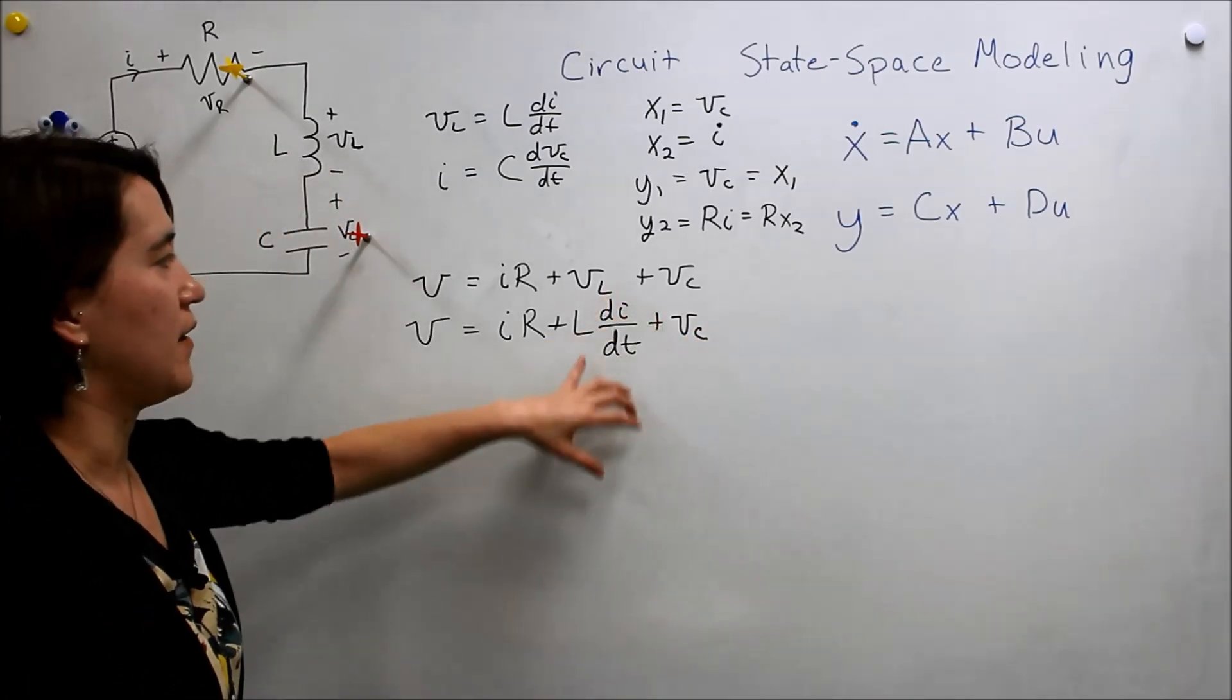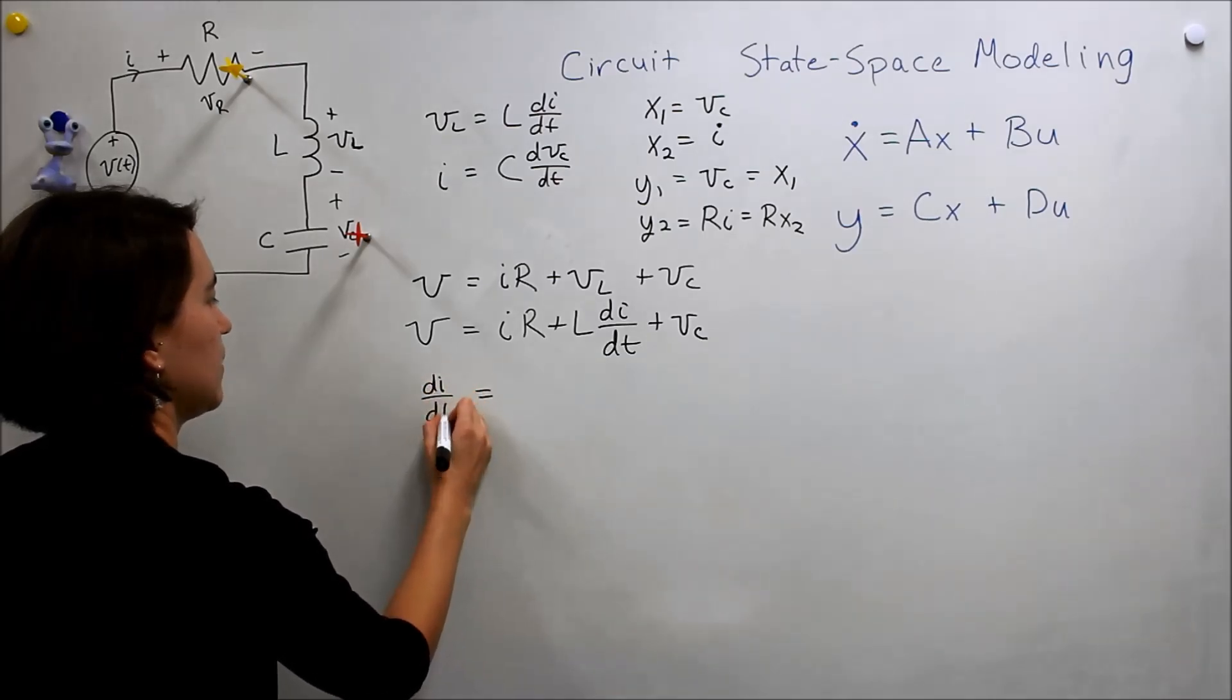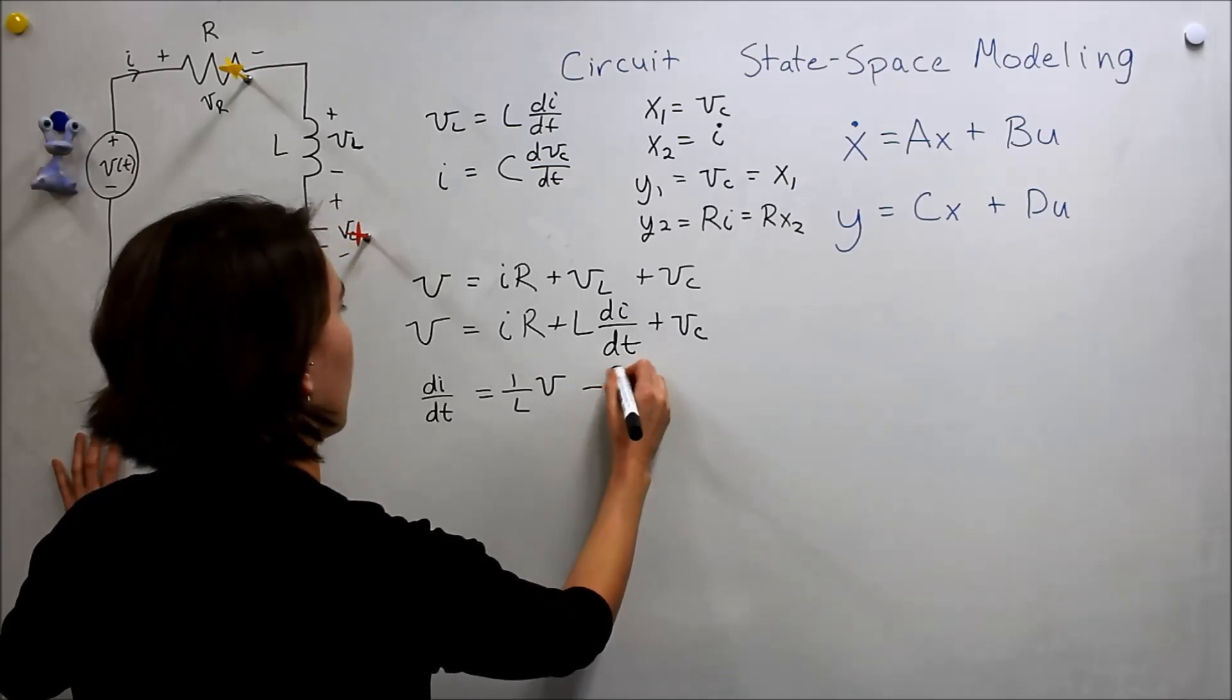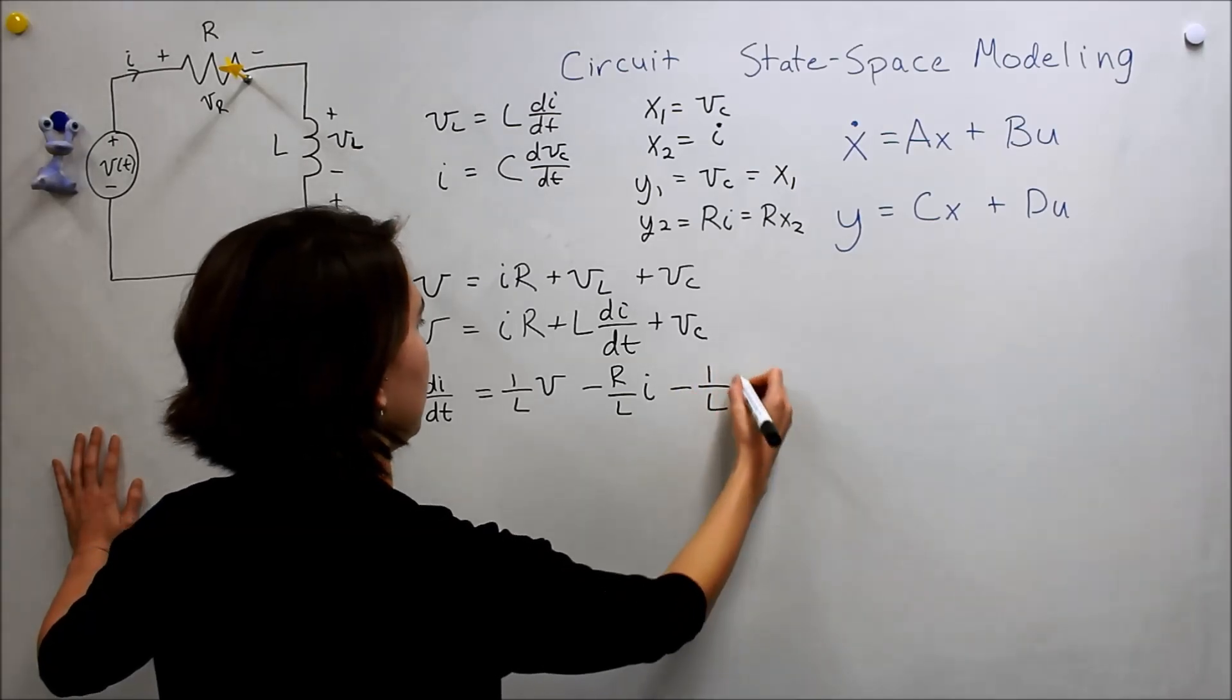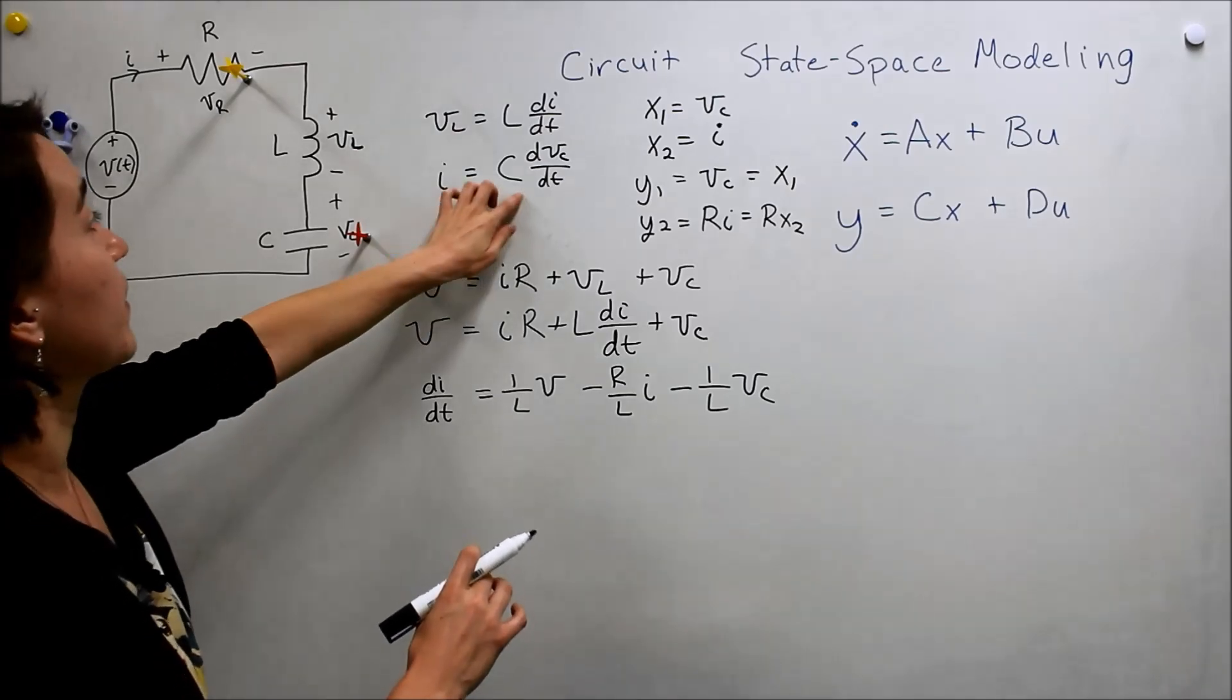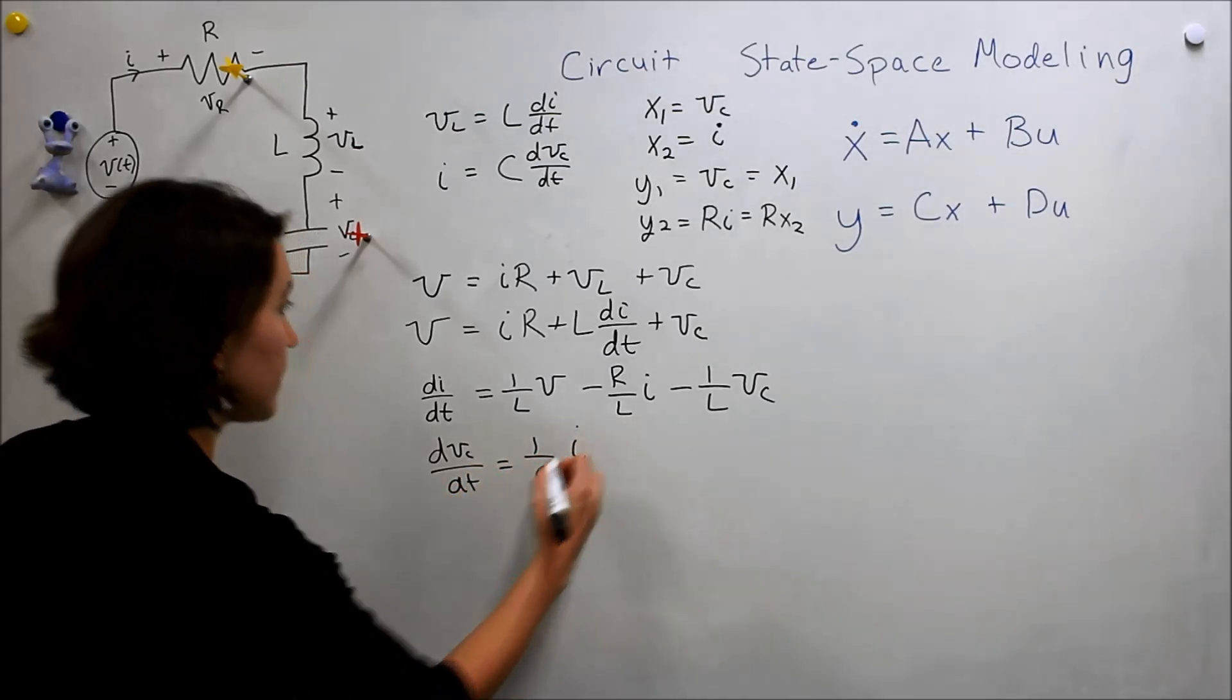Now, we want to get dI/dt all alone, so let's move things around and then divide. dI/dt will be 1 over L times V minus R over L times I minus 1 over L times VC. So now we have the dynamics written here, and we already know this equation. dVC/dt is equal to 1 over C times I.